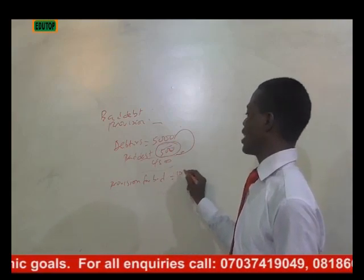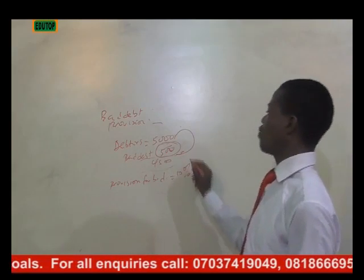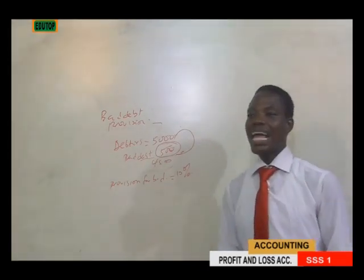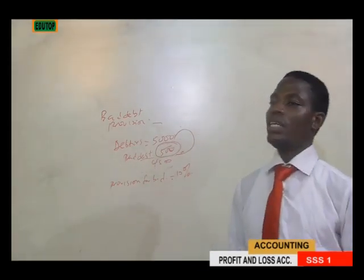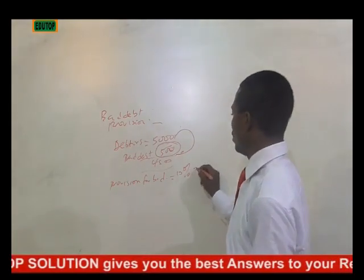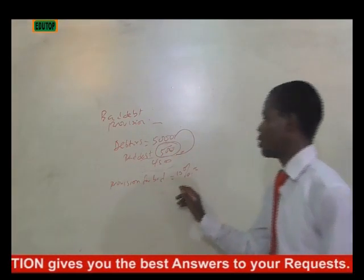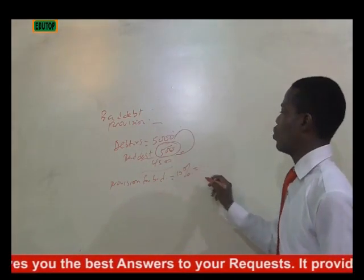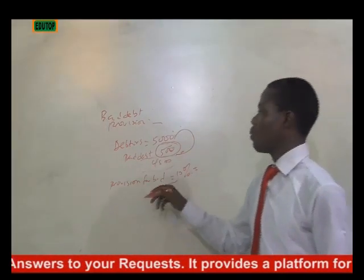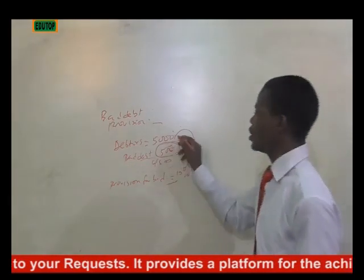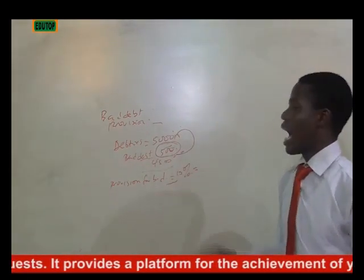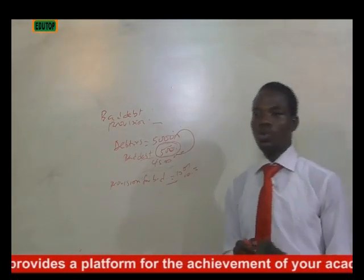Provision for bad debt may be given as a percentage — for example, 10 percent of debtors. You calculate the provision value and it affects the profit and loss account. You also deduct the provision amount from the debtor balance in the balance sheet.